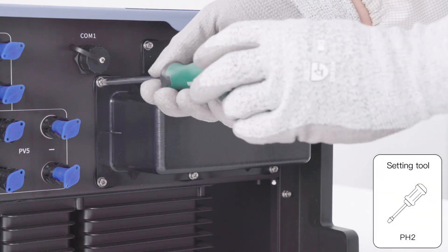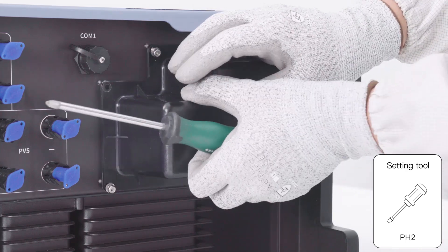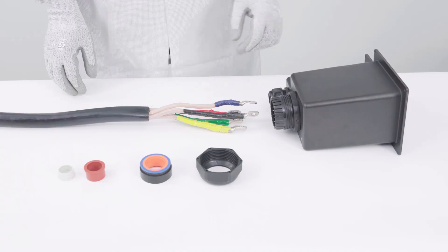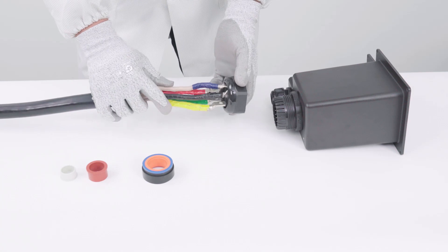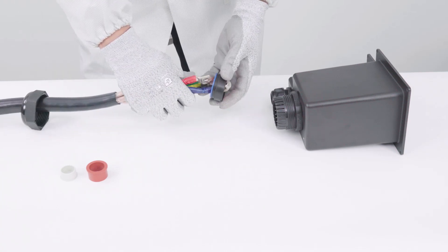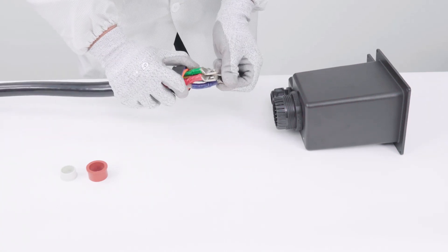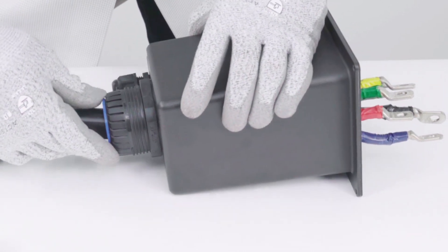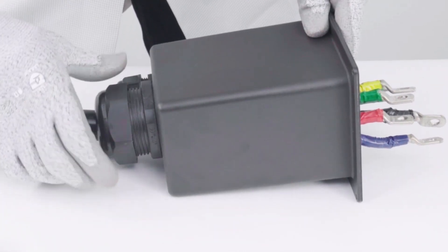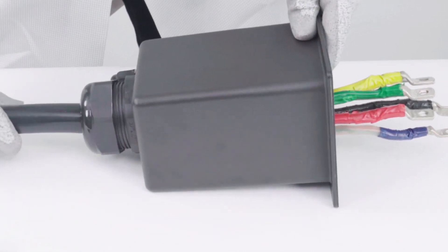Remove the AC/COM terminal cover from the inverter. Unscrew the swivel nut from the cable gland for the AC connection at the connector cap. Thread the swivel nut over the AC cable. Route the AC cable into the inverter through the cable gland.